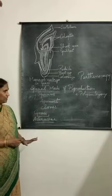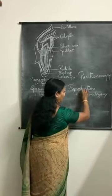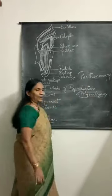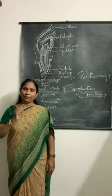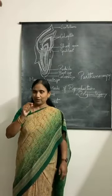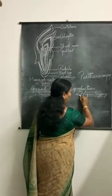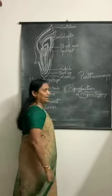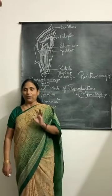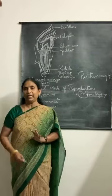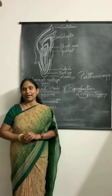This is about apomixis. The next special mode of reproduction is polyembryony. Look at the term — poly refers to many, so many embryos present inside the seed. Usually, one ovule will develop into one seed. But here, many embryos are present in the seed. This phenomenon is called polyembryony. The occurrence of more than one embryo in a seed is called polyembryony.